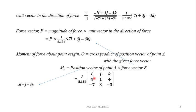To compute the cross product, we express it as a determinant with i, j, k in the first row. The r vector components are 4, 1, 4, and the force vector components are (1/8.186)×(-7), (1/8.186)×3, and (1/8.186)×(-3) for i, j, and k respectively. The factor P/8.186 is common throughout.